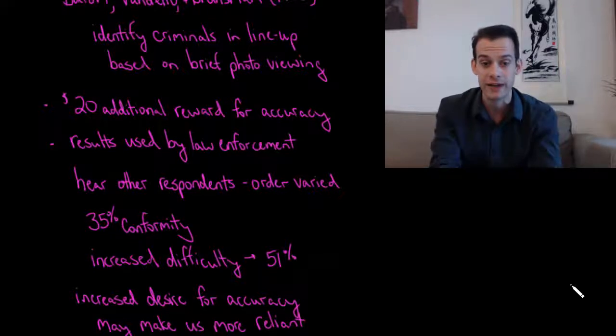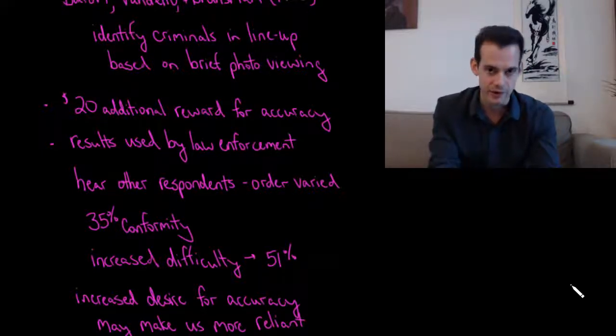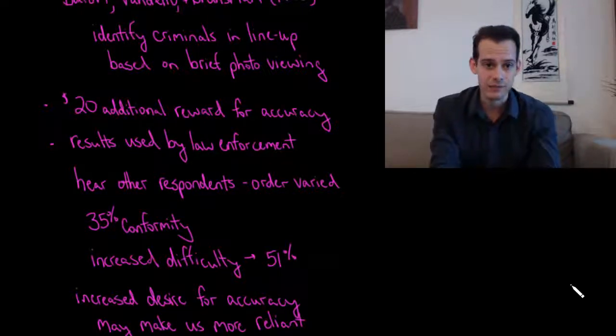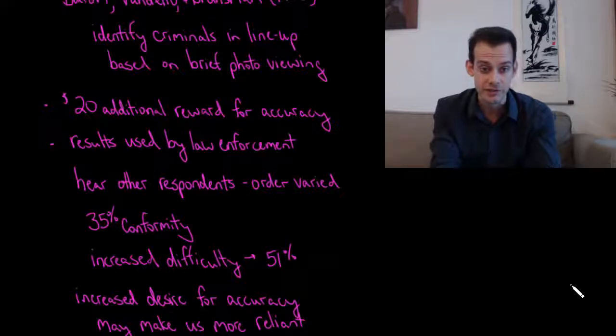And they were given additional incentives to make the task seem even more important and to increase their desire to get the right answer. And the first part of this was they were offered an additional reward for getting a high level of accuracy. If you get enough of the correct responses, we'll give you an extra $20. And to increase the importance of the task, they were told this study is going to be reviewed by law enforcement and it's going to be looked at by judges who are going to take this into consideration in their courtrooms and how they use eyewitness evidence. And so please try your best to do a good job. So they increased the sense of importance of the task. And as people gave these answers to the lineup, they could hear the responses of other participants who were actually confederates. And what the researchers wanted to see was when the participant answers after the confederates and the confederates have intentionally given the wrong answer, how often will they conform? And what they found is similar to Asch's results. They found a rate of about 35% conformity. But then they made the task harder.